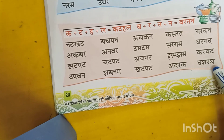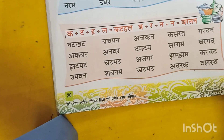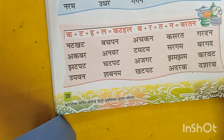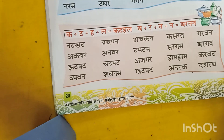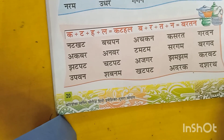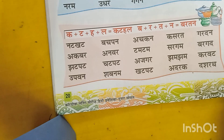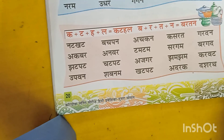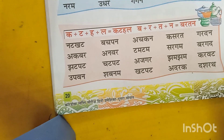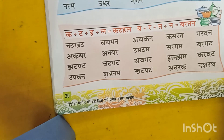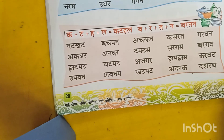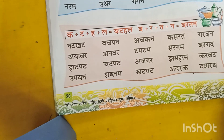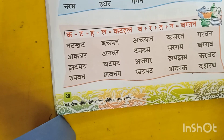Okay students, this way we have read 4-syllable words — just as we read 2-syllable and 3-syllable words. Now we will practice. Okay, bye.